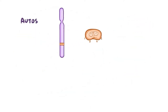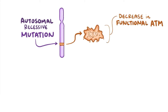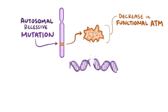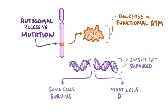In ataxia telangiectasia, there's an autosomal recessive mutation of the ATM gene, and this leads to a decrease in the amount of functioning ATM protein. As a result, cells that undergo a double-stranded break don't have sufficient ATM to repair the break.